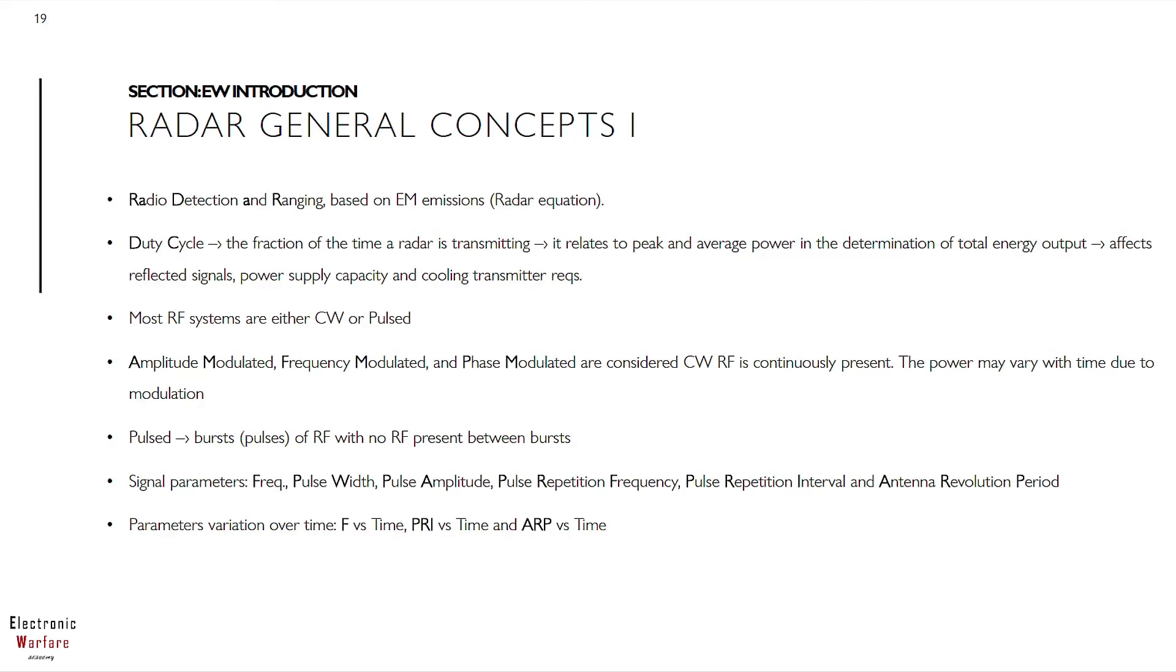Fourth, typical signal parameters which characterize systems are frequency, pulse width, pulse amplitude, pulse repetition frequency, pulse repetition interval, and antenna revolution period. Fifth, signal parameters which can be modified in time include frequency, pulse, pulse repetition interval, and antenna revolution period. Please remember these mentioned parameters as they will be mentioned in the following slides.